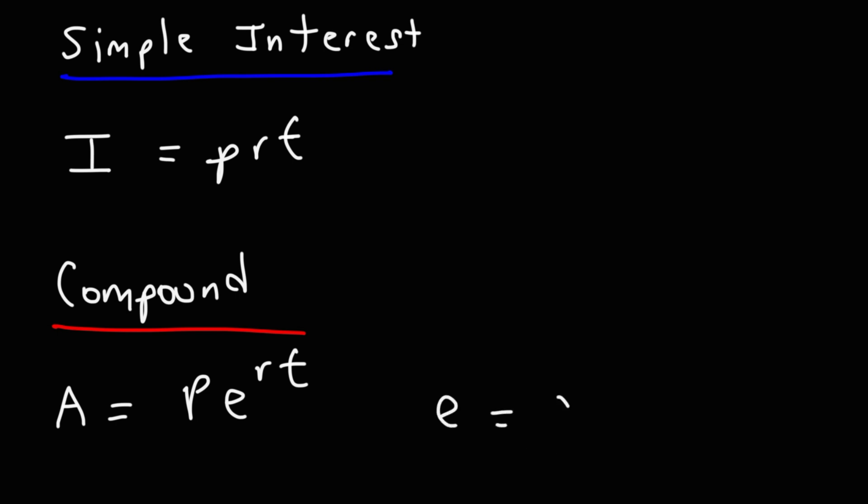E is a special number — it's approximately 2.71828. To find the exact value of e, you can use a calculator and type in inverse natural log, which gives you 2.718281828 and it repeats.